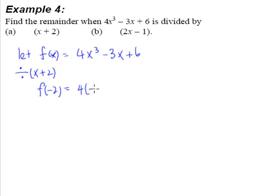We will get 4 multiplied by -2 raised to the power of 3, minus 3 multiplied by -2 plus 6. From a calculator, this shouldn't be difficult at all. This will be giving you a value of -8. -8 multiplied by 4 will give us a value of -32 here, and this becomes a positive 6 plus 6.